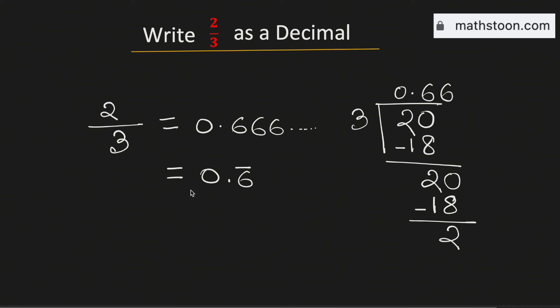This means 2 over 3 as a decimal is equal to 0.6 with 6 repeating and this is our final answer. Thank you for watching. Please like, share and comment on the video. Also do subscribe the channel.